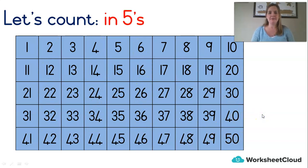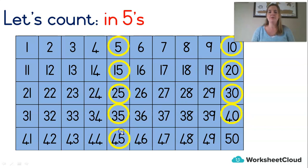Let's count in fives. We're starting at the number five and we plus five more each time. Count with me. 5, 10, 15, 20, 25, 30, 35, 40, 45, 50. Well done.